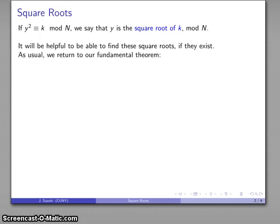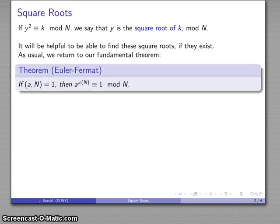As usual, the starting point is our fundamental theorem, the Euler-Fermat theorem. If two numbers are relatively prime, and phi of n is the Euler-phi function, then a to the power of phi of n is going to be congruent to 1 mod n.